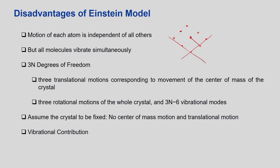If we assume that the neighbouring atoms will be vibrating simultaneously, then overall a crystalline molecule will have 3N degrees of freedom for N number of atoms - x, y and z directions give 3N degrees of freedom. There will be 3 translational motions corresponding to the movement of the centre of mass and 3 rotational motions corresponding to the entire crystal. So overall we are left with 3N minus 3 minus 3, giving 3N minus 6 vibrational modes due to the neighbourhood of the central atom.